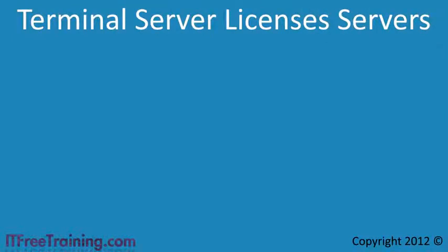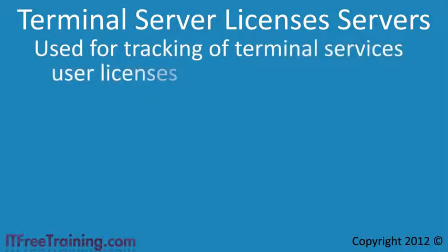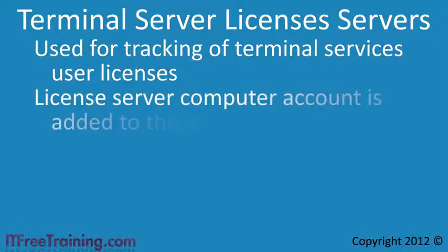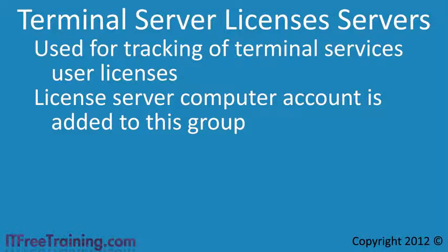The next group is Terminal Server License Servers. This group is used to provide tracking of user licenses in Active Directory. A user account in Active Directory has licensing information stored in it. In order for the terminal server licensing software to access this information, the license server needs to be added to this group. This group provides a bridge between the terminal server licensing server and the licensing information stored in Active Directory user accounts.